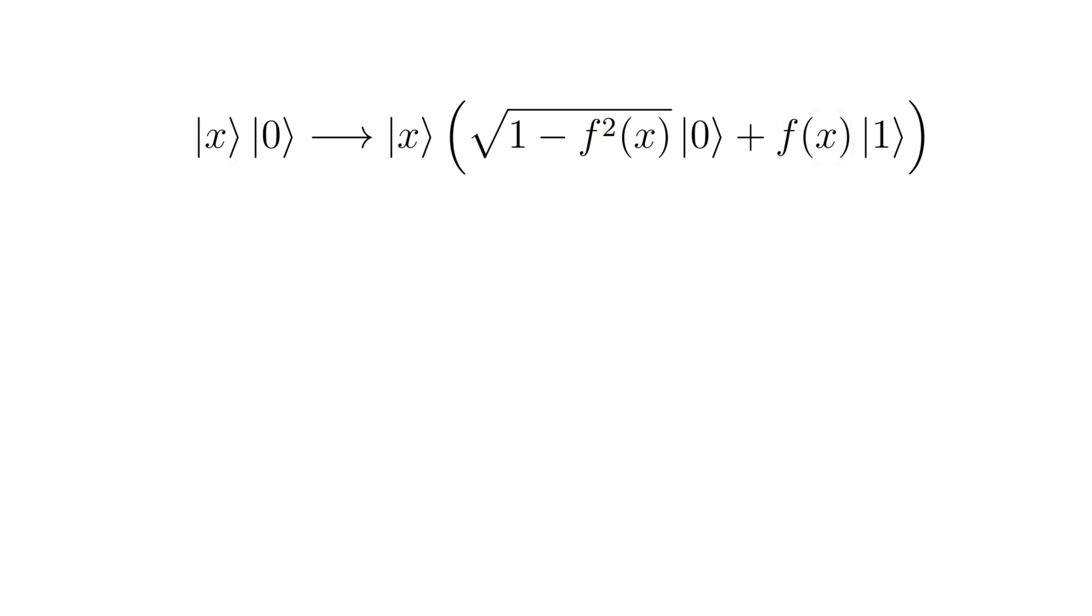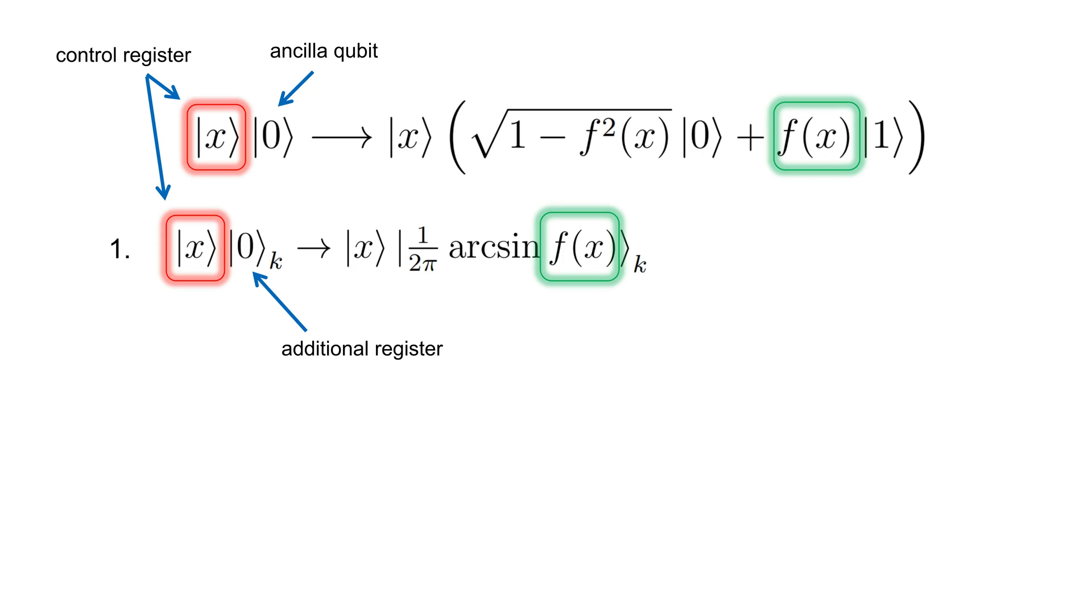Such mapping can be done in two steps. First, one needs to compute the arc sine of the control register performing the following mapping to an additional register. If this additional register consists of k qubits, it will be a binary representation of the arc sine of the function f(x) divided by 2π on k qubits.